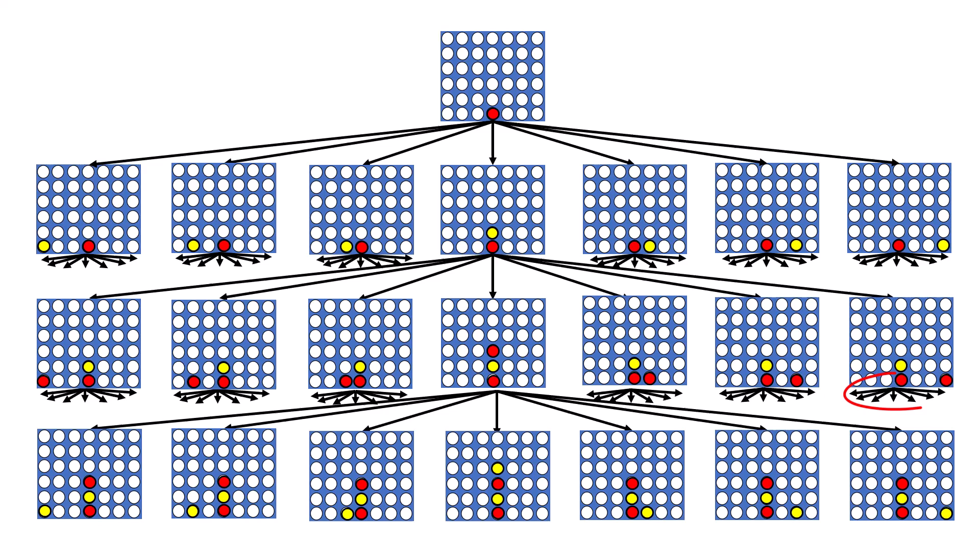The number of possible game states increases exponentially as we go further down the tree. Due to computational constraints, the computer can't realistically examine every possible game state and its subsequent moves, all the way down to the bottom of the tree every time.